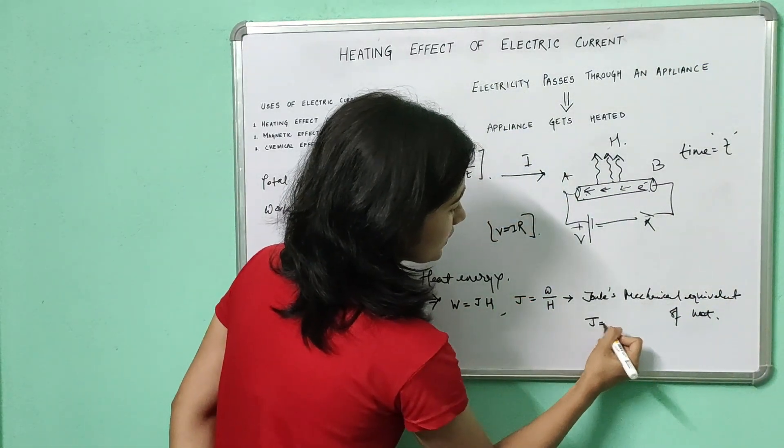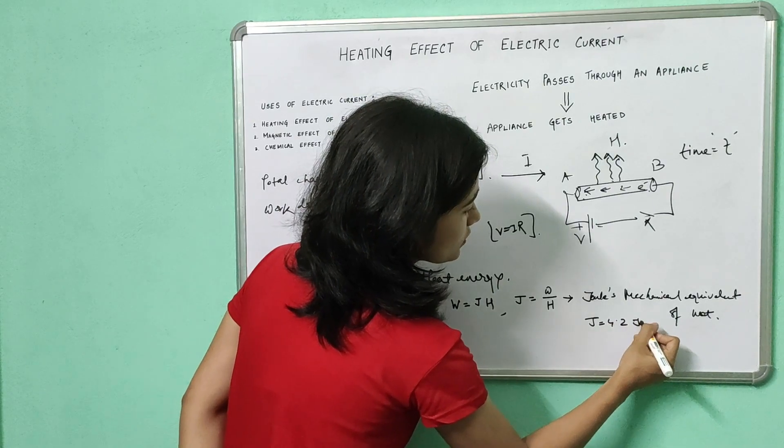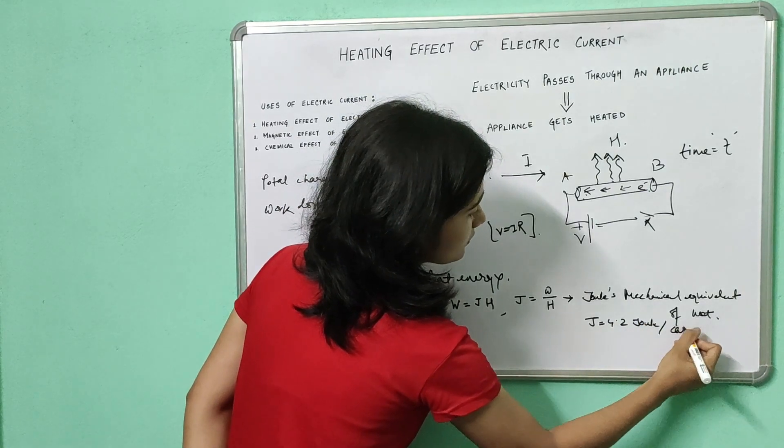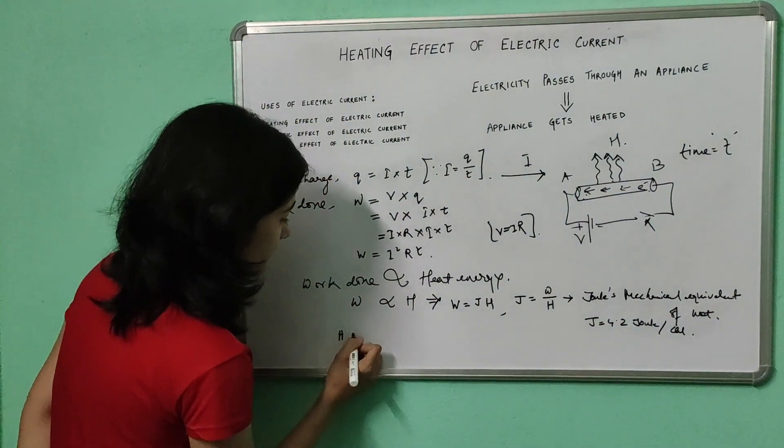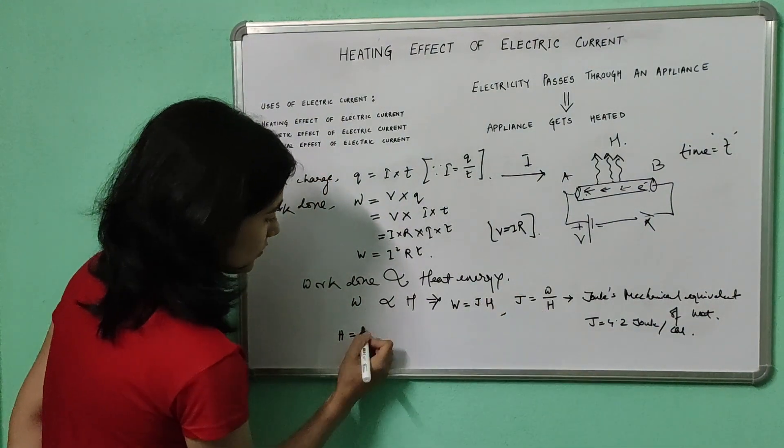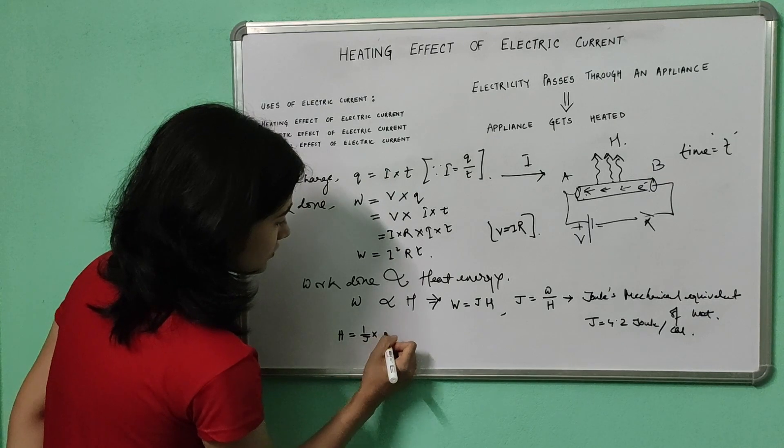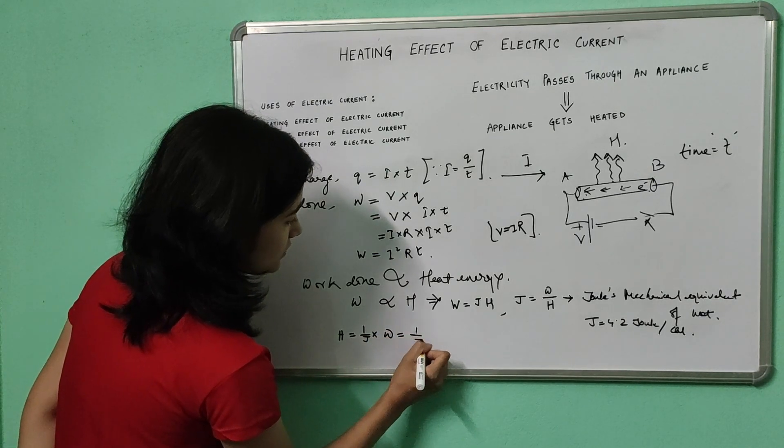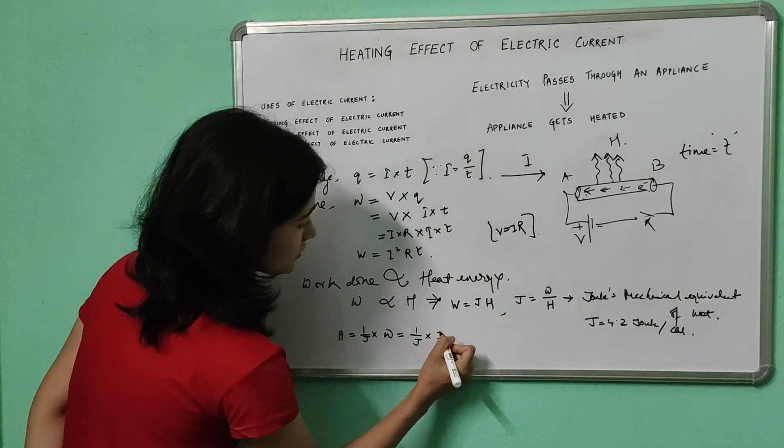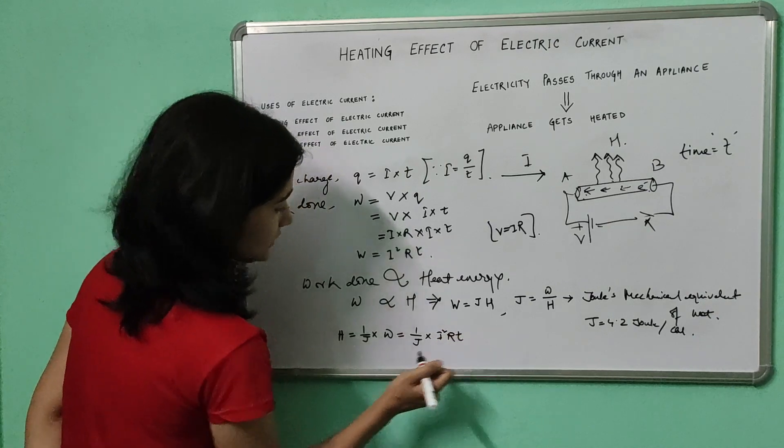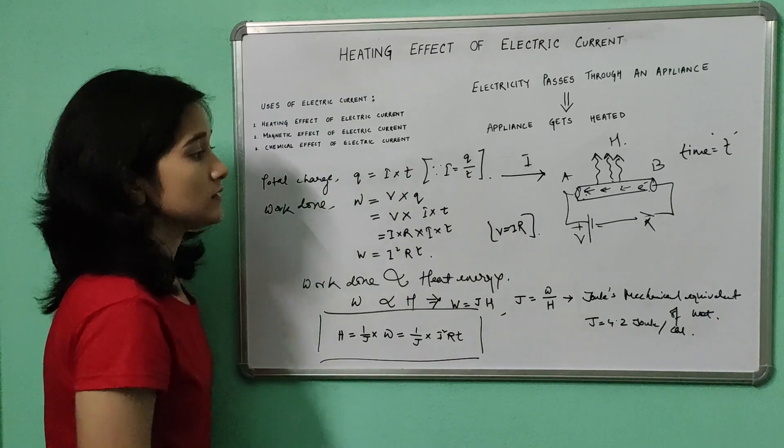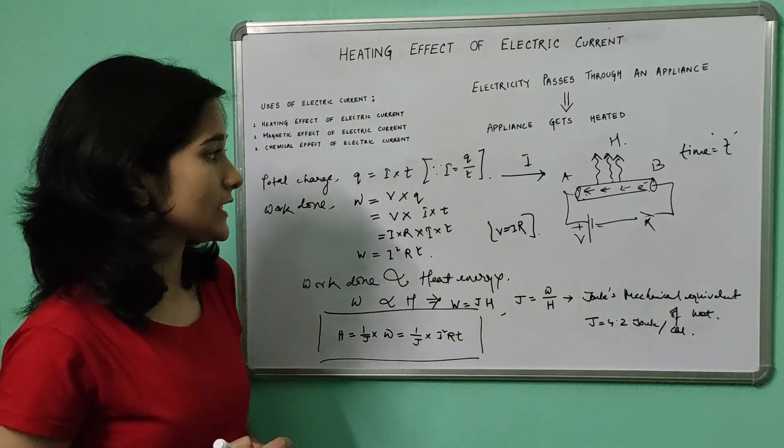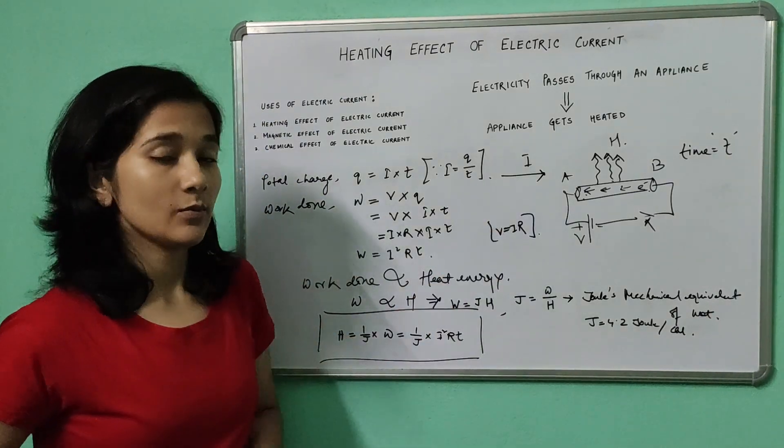Its value is 4.2 Joule per calorie. So we have H is equal to 1 by J into W which is equal to 1 by J into I square R T. This is the final expression for the heat liberated by the metallic conductor when a current I passes through it.